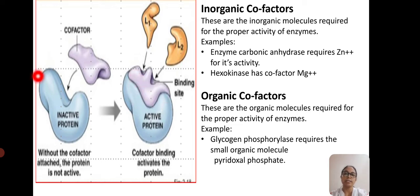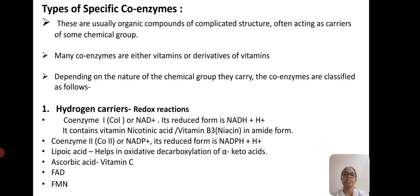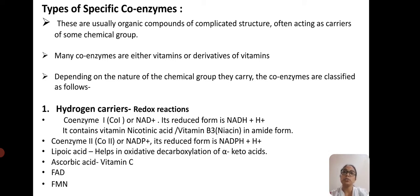Some organic cofactors are also very helpful in activating the apoenzyme part of conjugated enzymes. These are organic molecules required for the proper activity of the enzymes. For example, glycogen phosphorylase requires the small organic molecule pyridoxal phosphate, which is an organic cofactor helping in the activity of the enzyme.